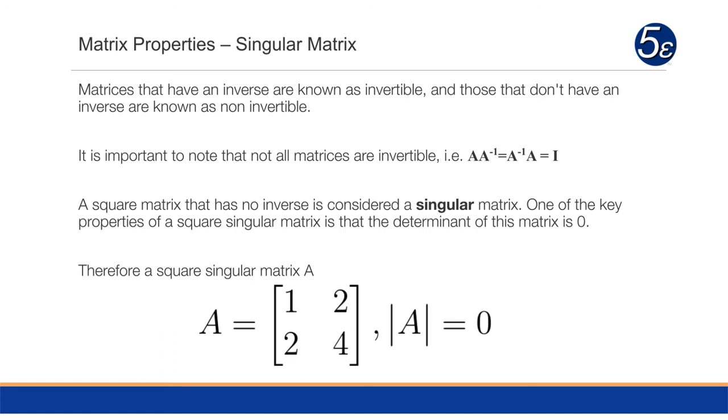So here's an example. We have a matrix A with entries 1, 2, 2, 4. The determinant of A is 0, and therefore it's a singular matrix.